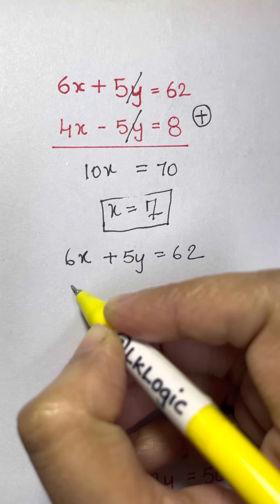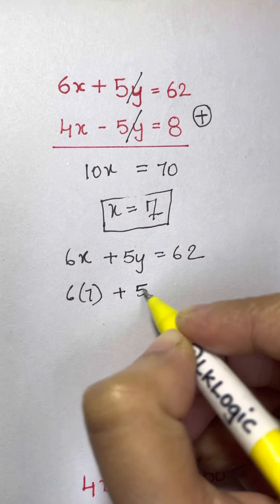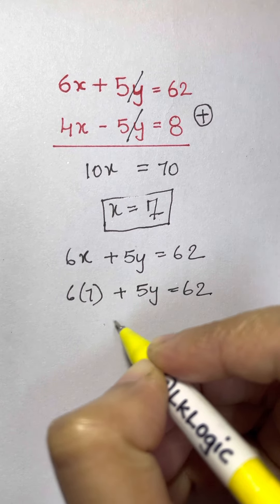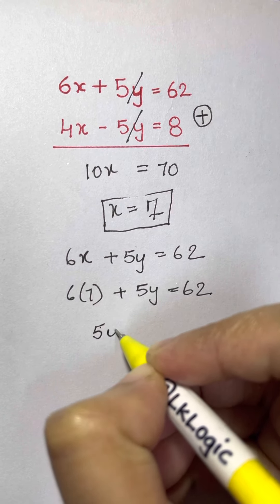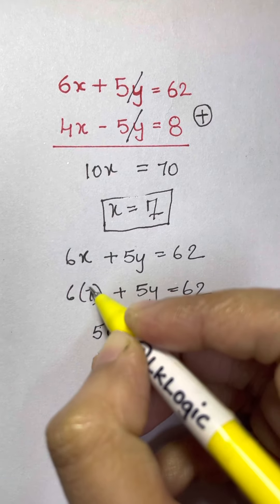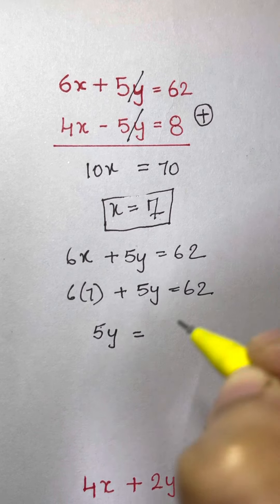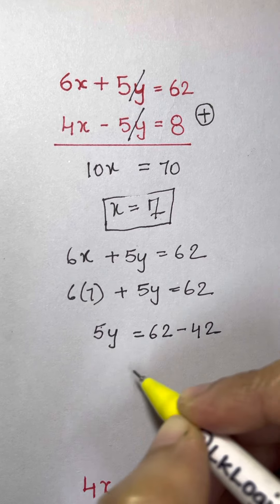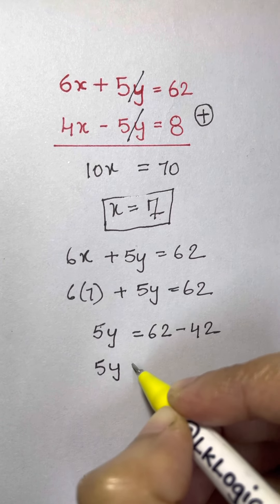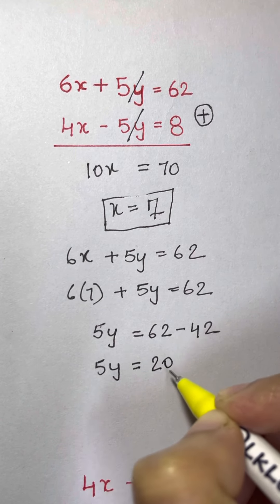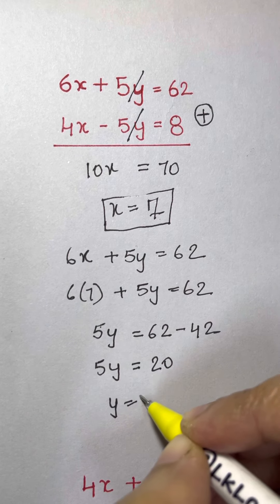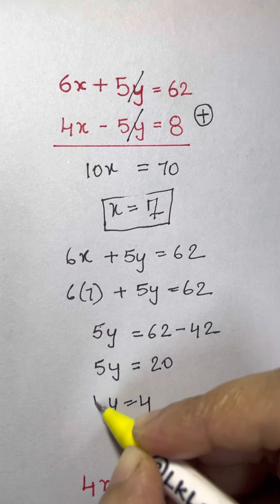So you have 6 times 7 plus 5y equals to 62. 6 times 7 is 42. So we have 5y equals to, you bring 42 the other side, it becomes negative. 62 minus 42. So we have 5y equals to 20. So y is equal to 20 divided by 5, that is equal to 4. This is how you find the values of x and y.